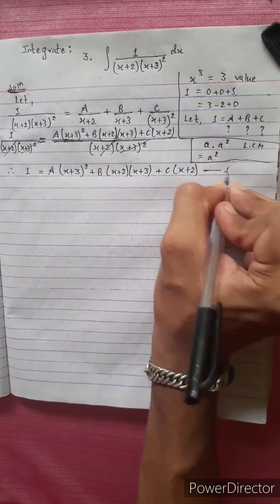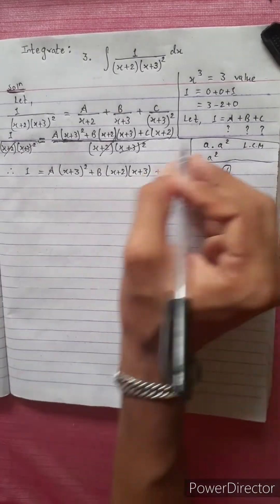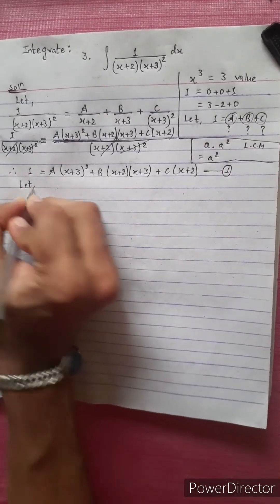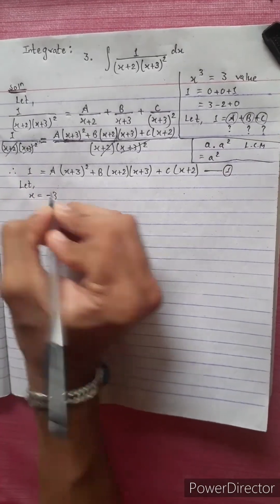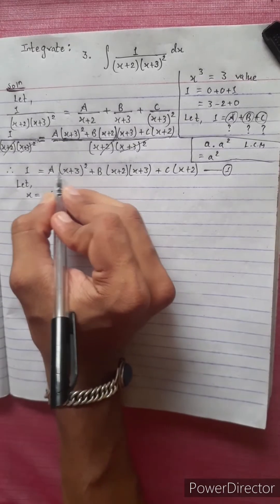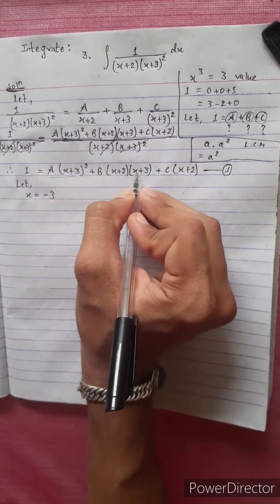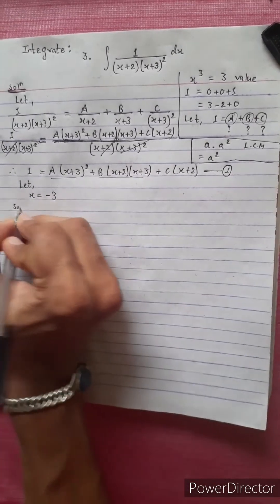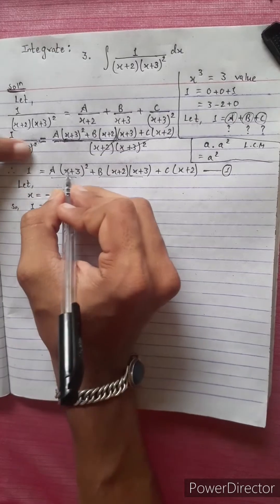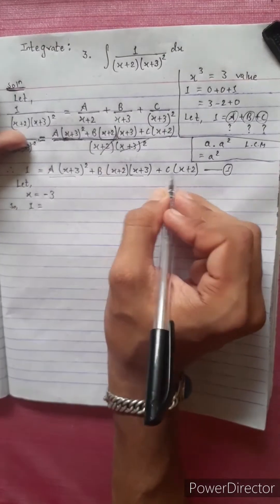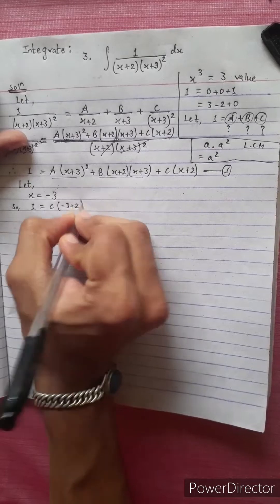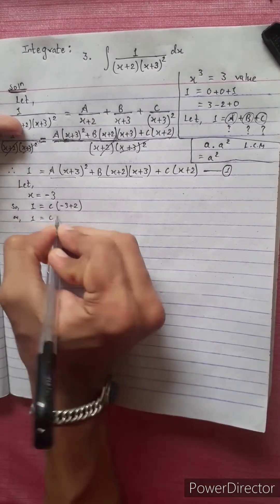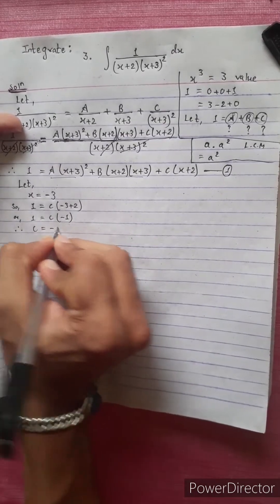Now I'm going to find the values of B and C. Let x equal minus 3. Then minus 3 plus 3 is 0, so the A and B terms vanish. We get 1 equals 0 plus 0 plus C times minus 3 plus 2, which is 1 equals C times minus 1. Therefore C equals minus 1.